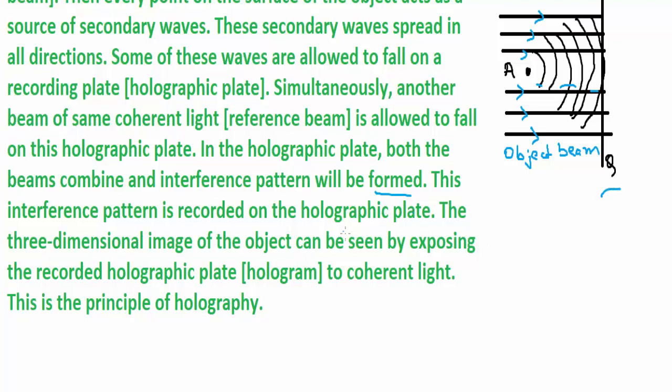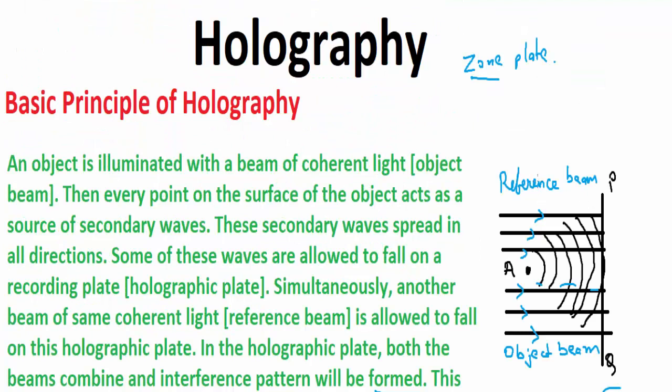This interference pattern is recorded on the holographic plate PQ. The three-dimensional image of the object can be seen by exposing the recorded holographic plate to coherent light. This is how holography works.